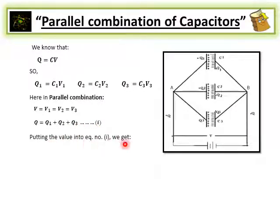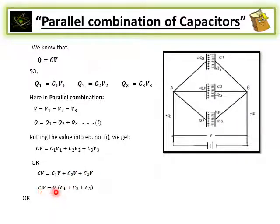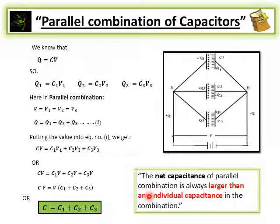Substituting values into equation number 1: CV = C1V1 + C2V2 + C3V3. Since all voltages are equal, CV = C1V + C2V + C3V. Dividing both sides by V, we get C = C1 + C2 + C3.